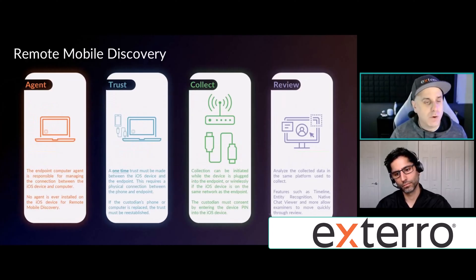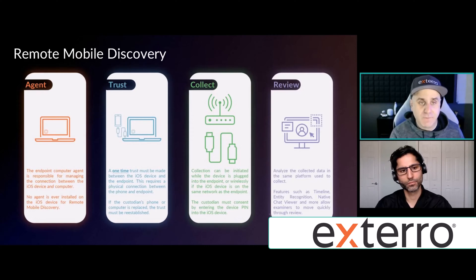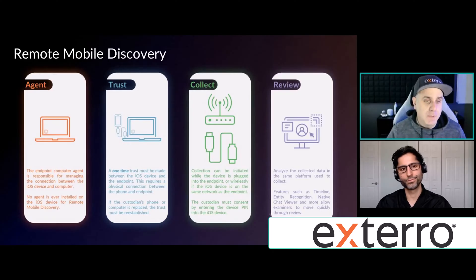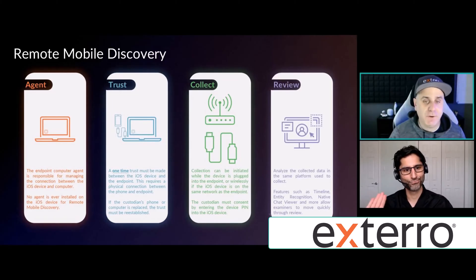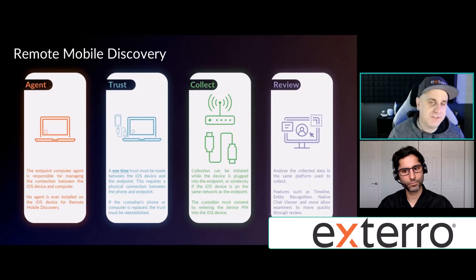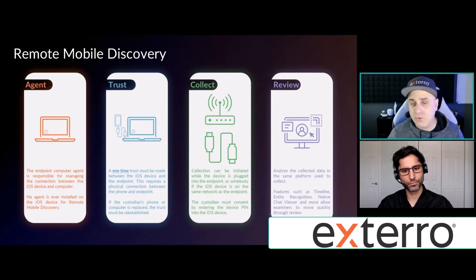So how does it work? How would it look for your user? First, you will need the Xtero Forensic Windows agent sitting on your employee's or custodian's laptop. No agent is ever installed on the iOS device. One time — whether that's when you hire someone and set up their laptop and company phone at the IT lab, or when the user receives their devices — you pair the phone and the laptop and they need to trust those two devices together one time. After that trust is established, you can collect as many times as you want without having to re-plug in and re-trust.